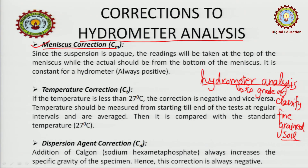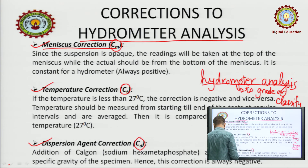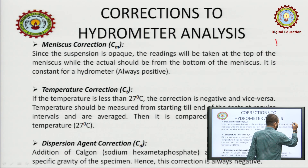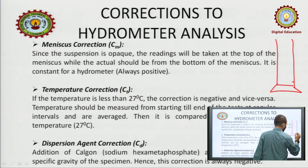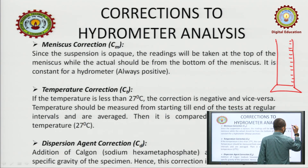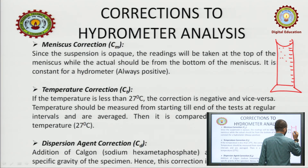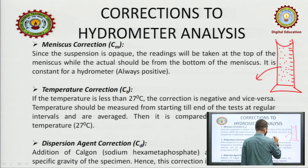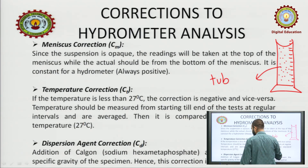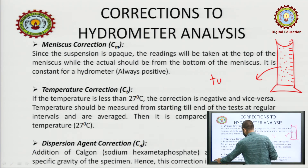Now let us move to corrections to hydrometer analysis. If you remember, the hydrometer analysis was carried out to classify fine grained soil. In this analysis there are three main corrections: the meniscus correction (Cm), the temperature correction (Ct), and the dispersing agent correction (Cd).